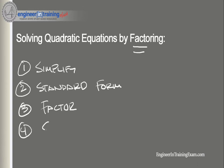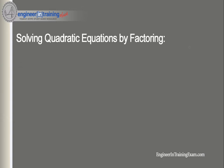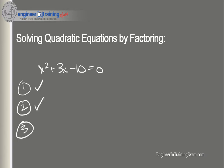Once we have it factored, we want to solve. Let's look at a quick example. Take the equation x squared plus 3x minus 10 equals zero. Step one, simplify — completed. Step two, standard form — completed. Step three, factor: this equation factors to x plus 5 multiplied by x minus 2 equals zero.